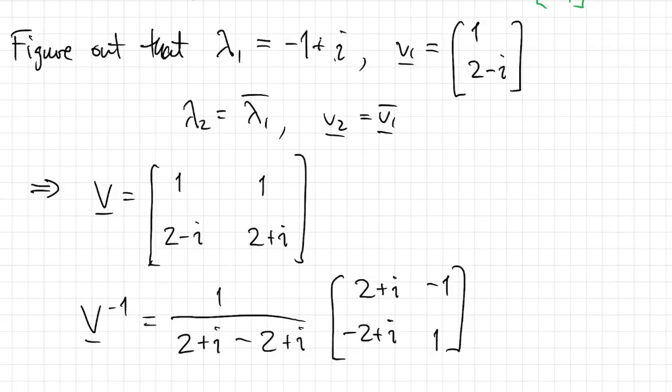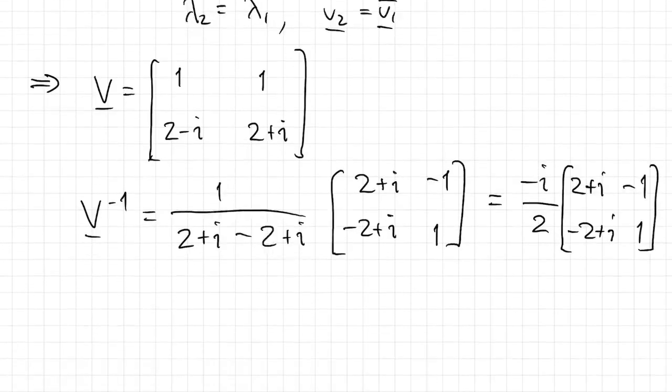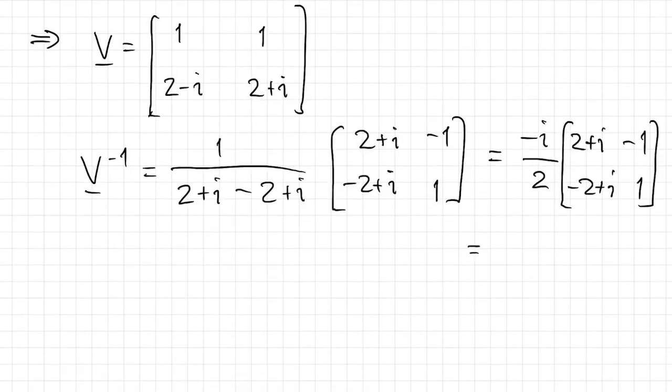And then 1 over i is equal to negative i, so we can simplify that fraction. And finally, we'll take that negative i inside and use the fact that i squared is equal to negative 1 to simplify things. There's the inverse.